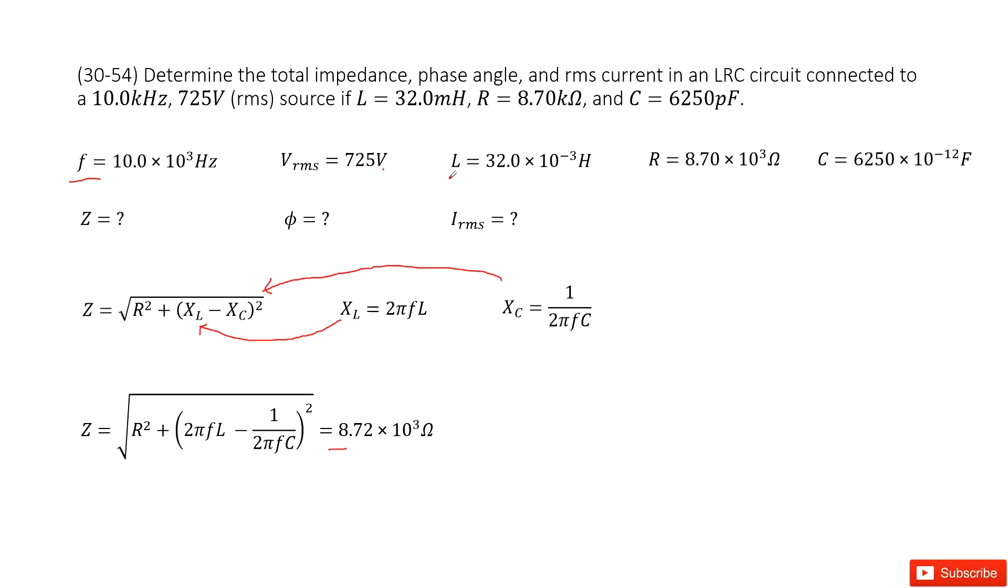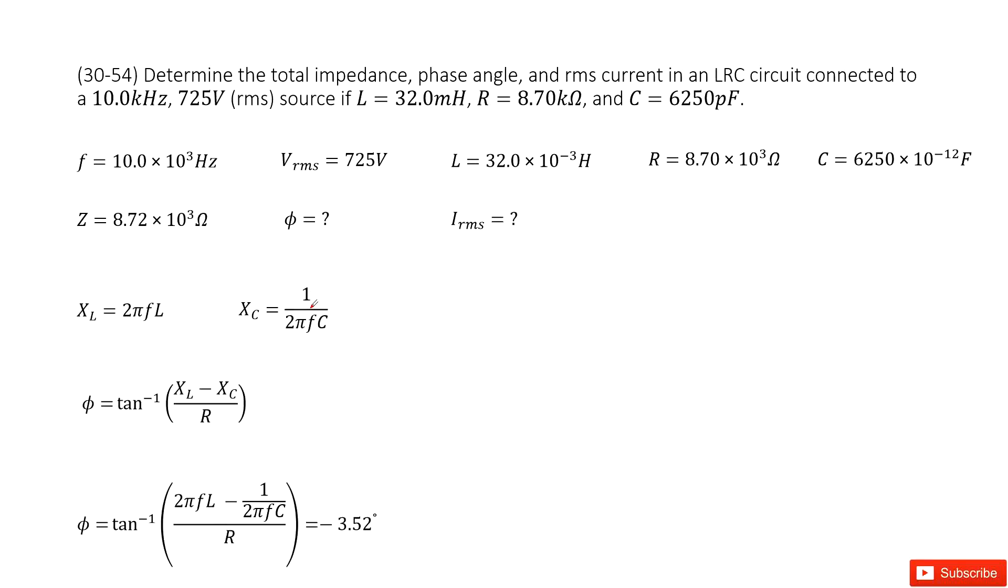The second one is finding the phase angle. So this is easy, right? We know the inductance and the capacitance will bring the phase angle. So this is the difference that L and C bring to the circuit, and then over the R and do the arc tangent. So we get the answer there, this is negative 3.52 degrees.